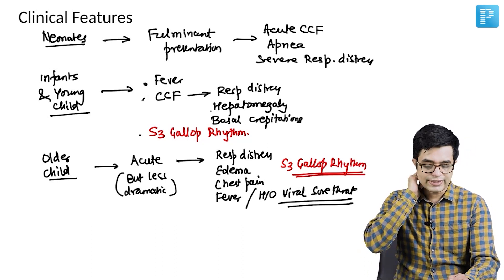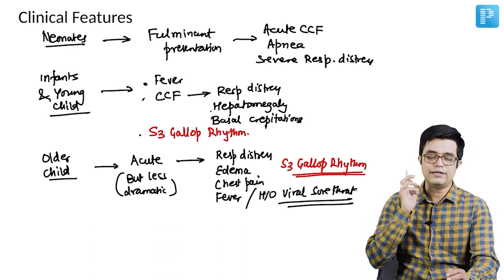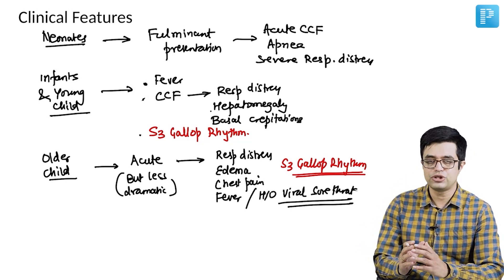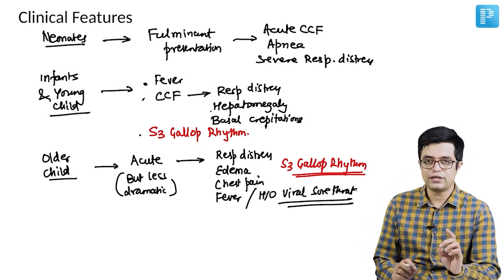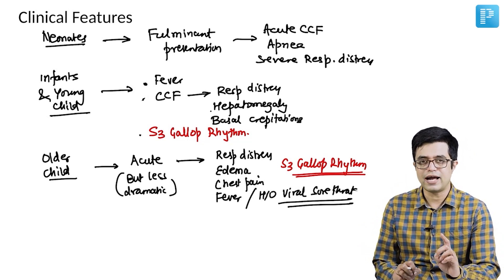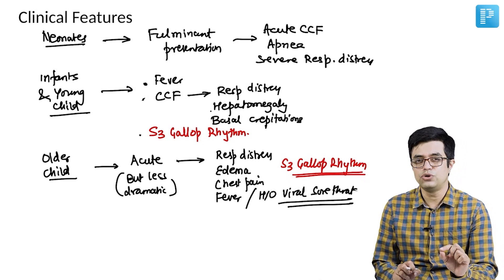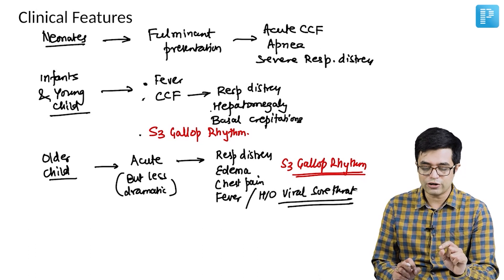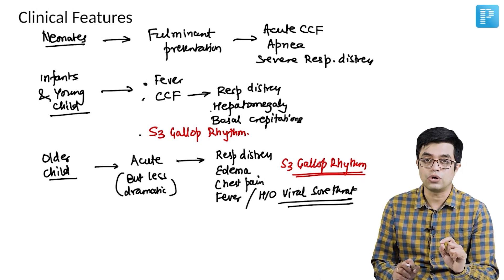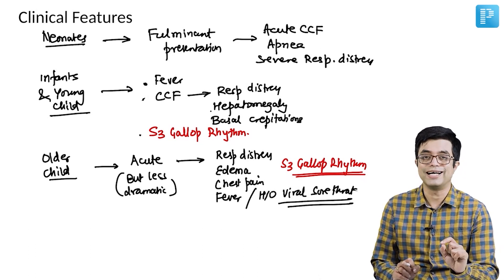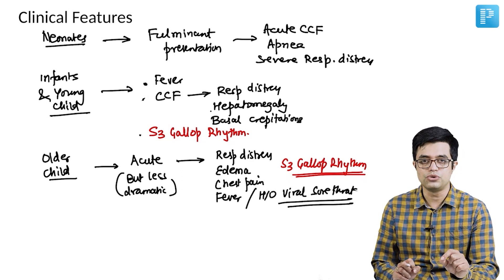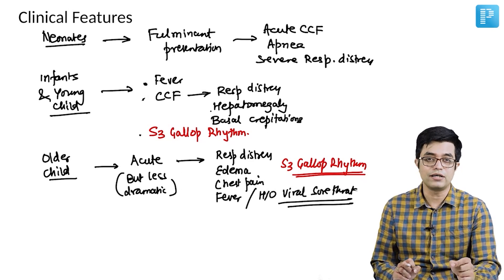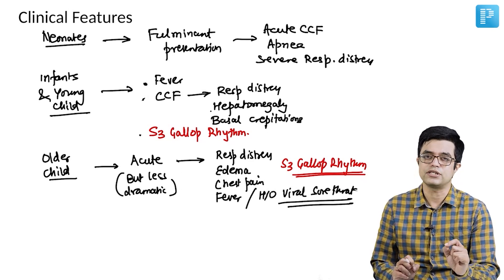In general, we say that in the first 6 months of age, whenever a newborn or a young infant has acute onset dyspnea and repeated apneic episodes, one of the differential diagnoses should always be myocarditis, and it is usually viral myocarditis which is commonly implicated in such children.